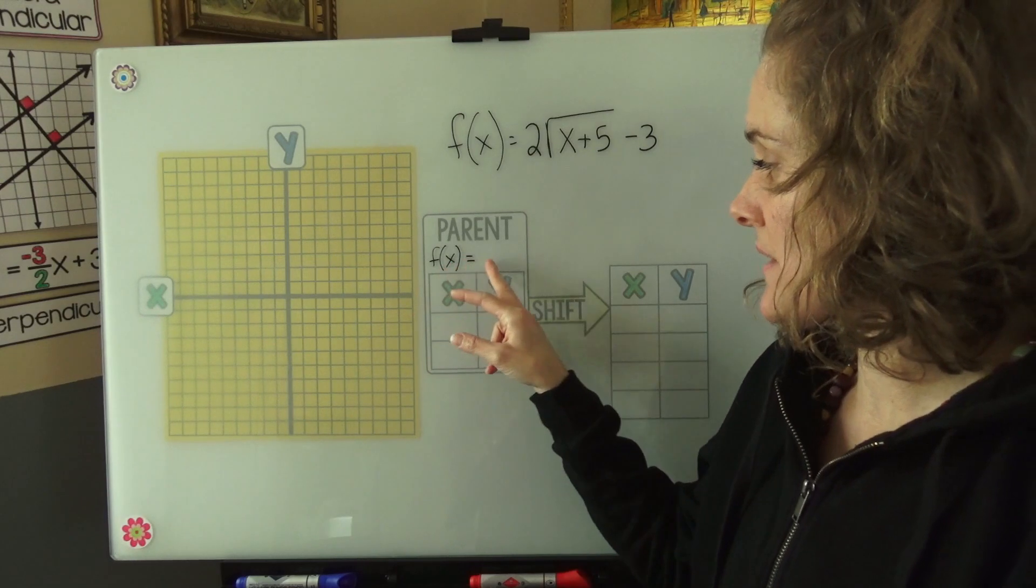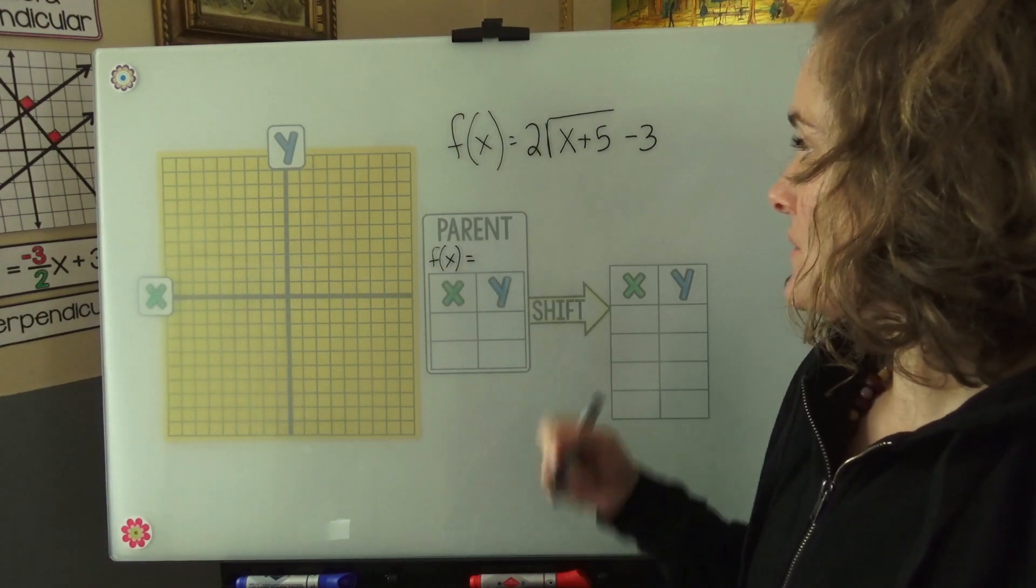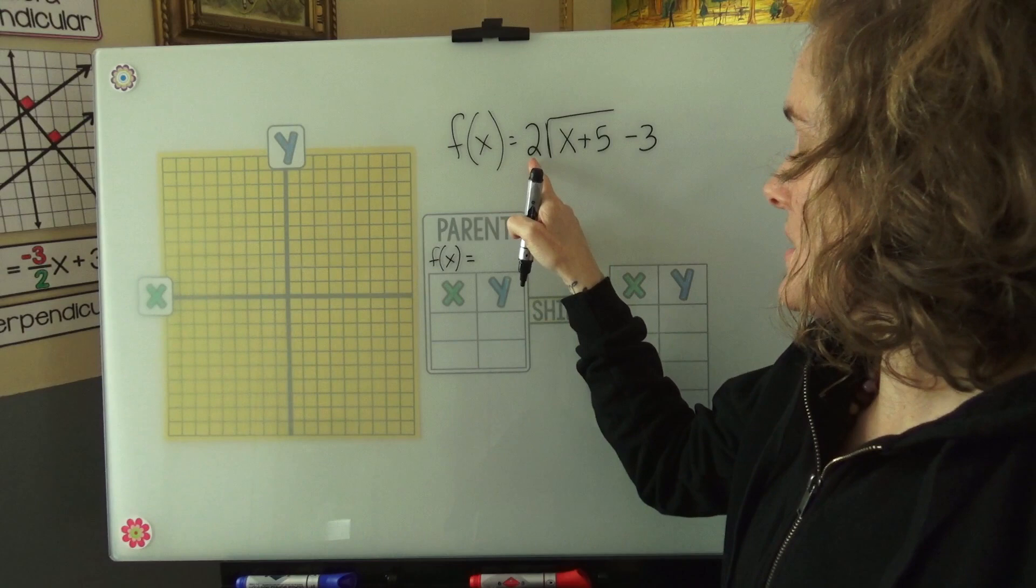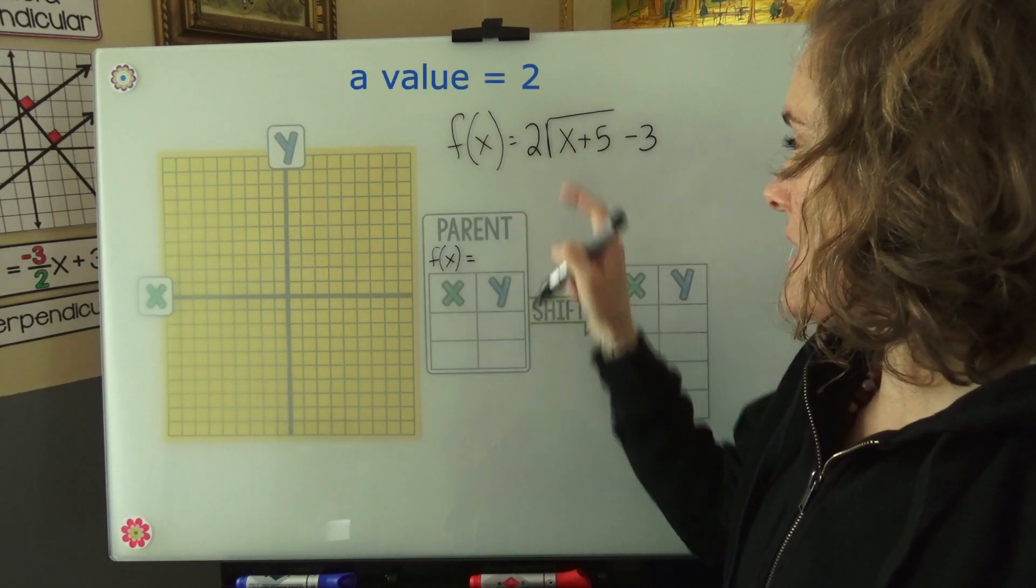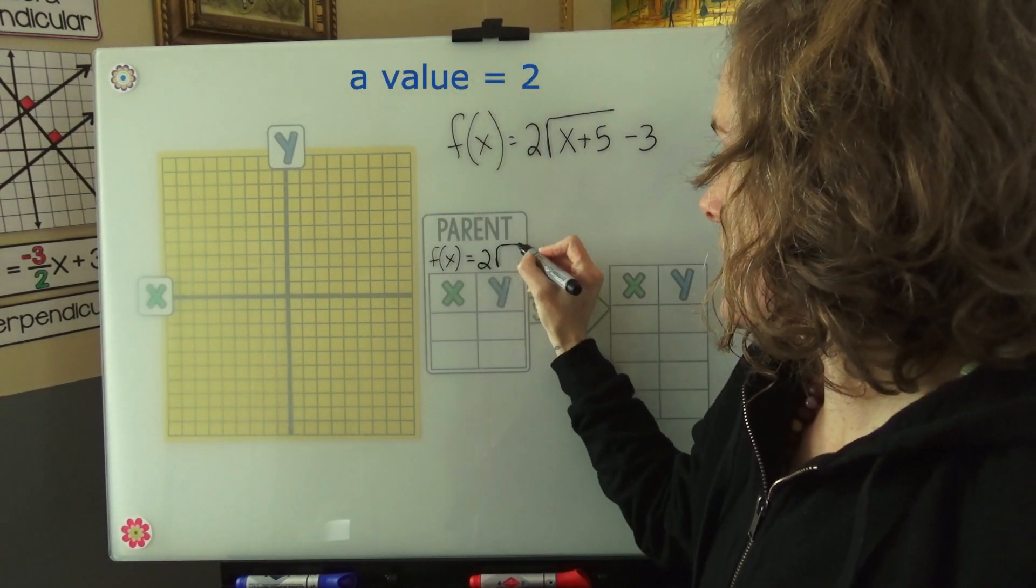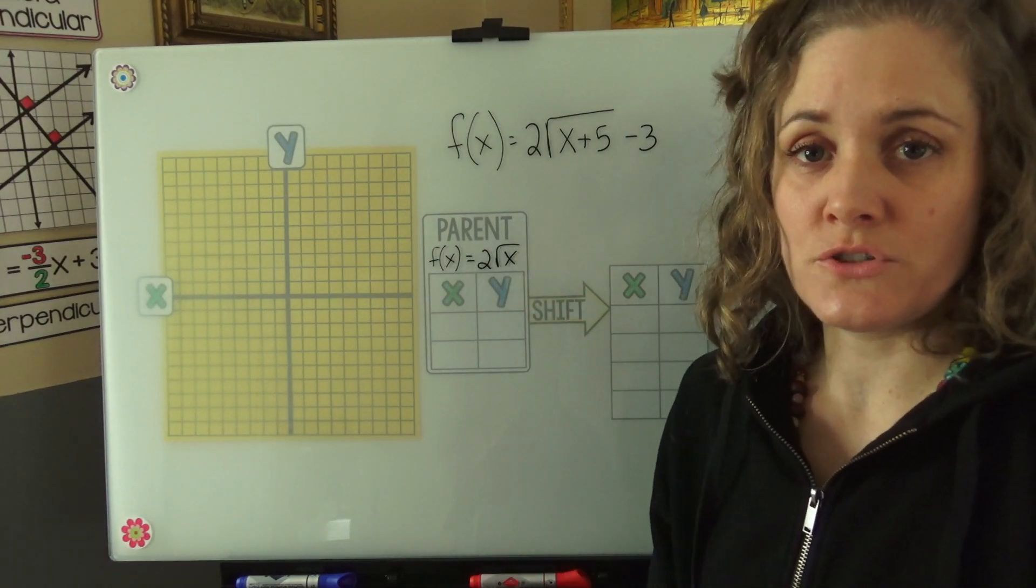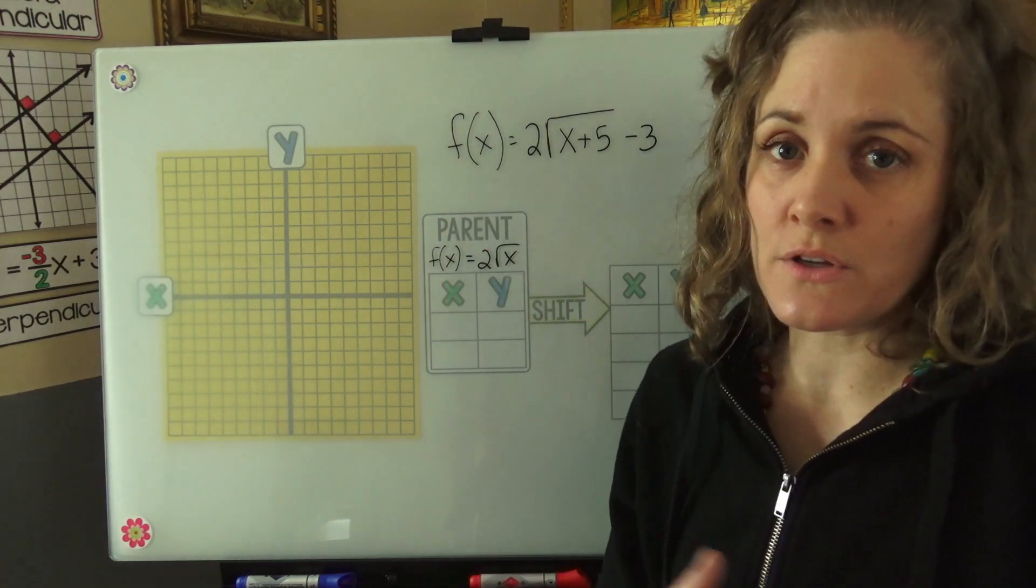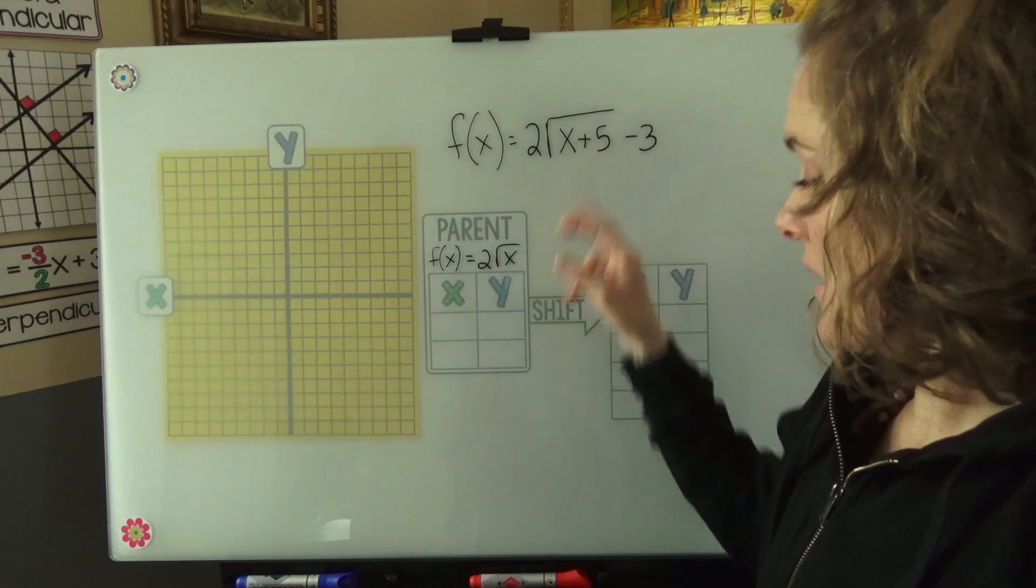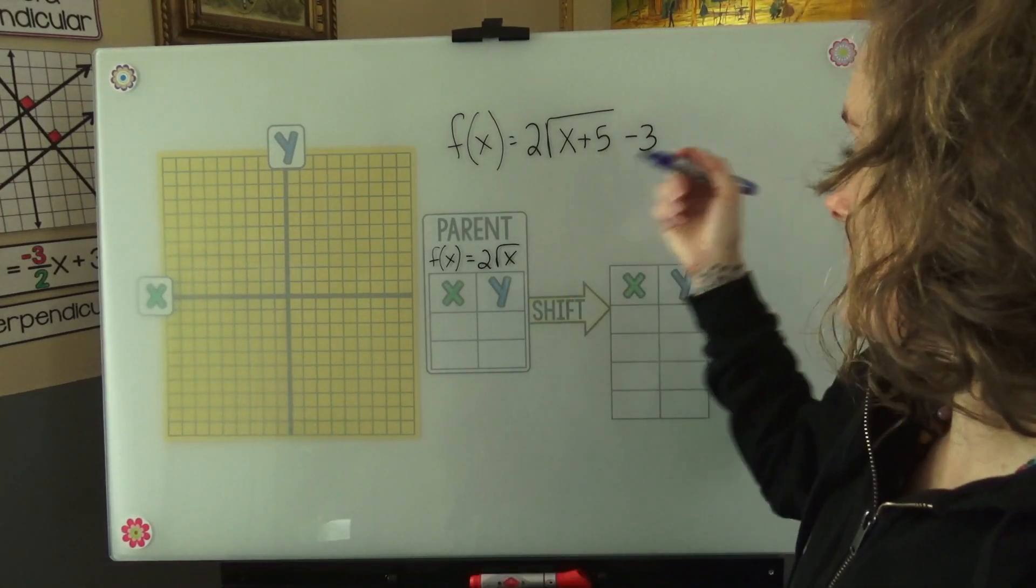The first thing we have to do is identify the parent function. We're going to take the shifts out, and we're just going to leave in the a value and the x, 2 root x. The 2 is important because it changes the shape of the graph, not just where the graph is on the grid. We are going to take out these shifts, and we should identify them now.